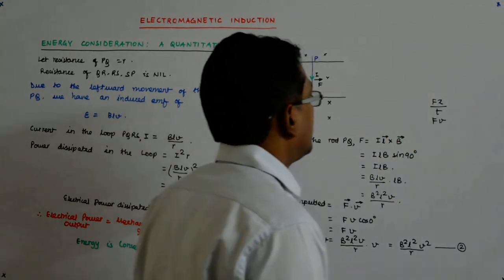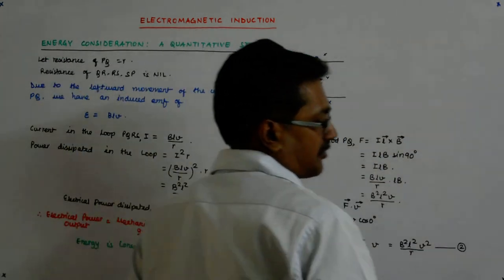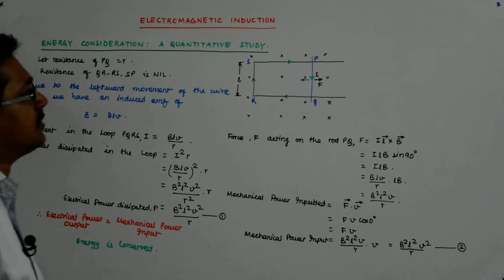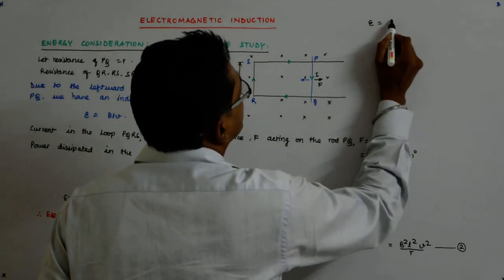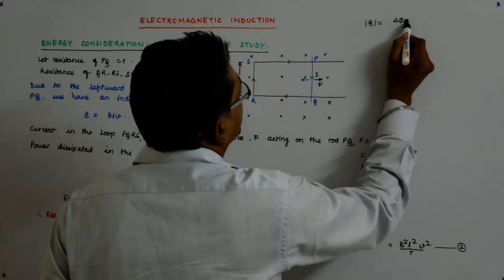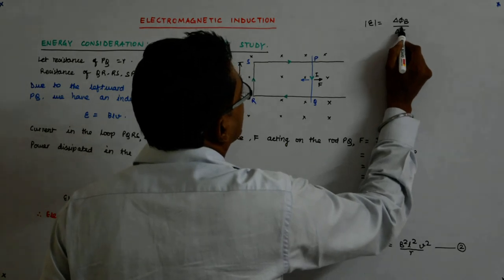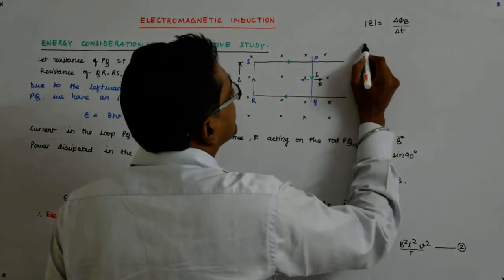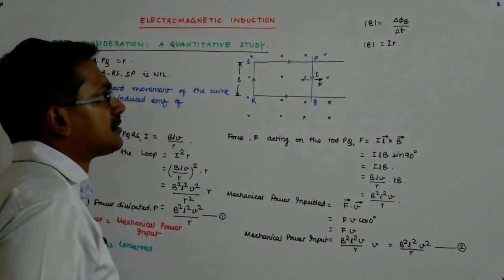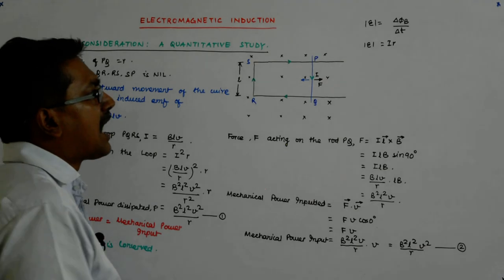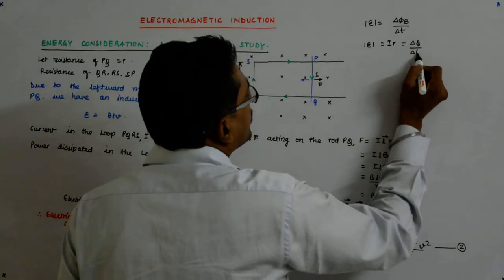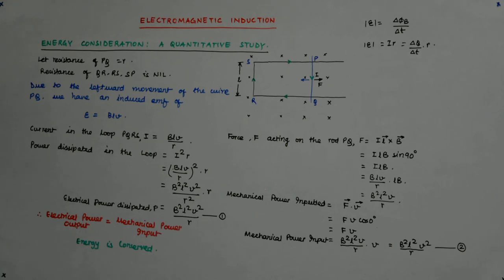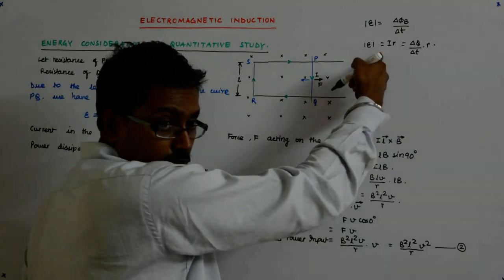There is another interesting relationship that arises from the manipulation of these equations. We have E as or mod E as del phi B upon del T. Right? I am taking the mod of it. Now, this is also equal to IR. Is it not? And I is what? Del Q upon del T into R. Is it not? Now, if I equate, this is Ohm's law. This is Ohm's. Now, if I equate them.